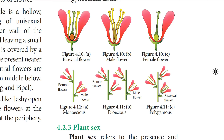A plant is hermaphrodite if it has bisexual flowers. If both male and female flowers are present on the same plant, it is monoecious — example: coconut. If male and female flowers are on two separate plants, it is dioecious — example: Borassus palmyra. If bisexual as well as unisexual flowers (staminate or pistillate) are present on the same plant, it is polygamous — example: Mangifera and Musa. Bisexual flowers are present in Hibiscus — it is hermaphrodite.